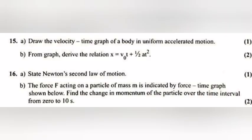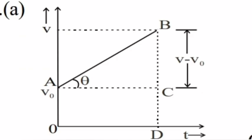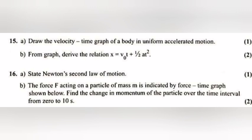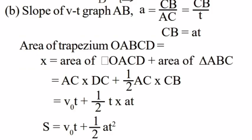Question 15: (a) Draw the velocity time graph of a body in uniform accelerated motion. (b) From graph, derive the relation X is equal to V₀T plus half AT square.